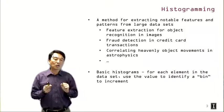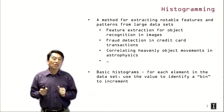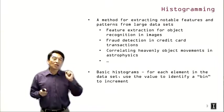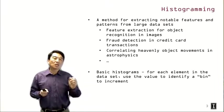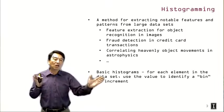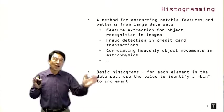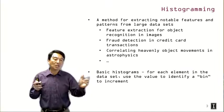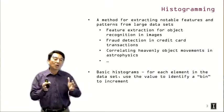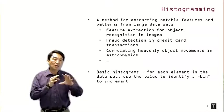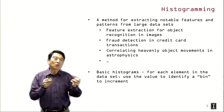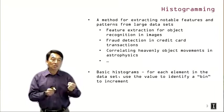So the basic histograms is really computed by having for each element in the data set, we use the value to identify a bin to increment. In general, we'll have a fairly large range of values that we would designate into a bin so that we can quickly summarize the nature of data into a fairly small set of data that we can quickly compare or make decisions on.